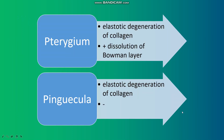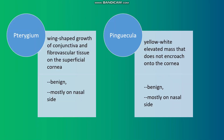In both conditions, there is elastotic degeneration of collagen, but in pterygium, there is also dissolution of Bowman's layer. In pterygium, we see growth towards the cornea and the lesion crosses the cornea. But in pinguecula, it doesn't encroach onto the cornea. In pterygium, there is wing-shaped growth of conjunctiva and fibrovascular tissue on the superficial cornea. But in pinguecula, there is a yellow-white elevated mass that doesn't encroach onto the cornea.